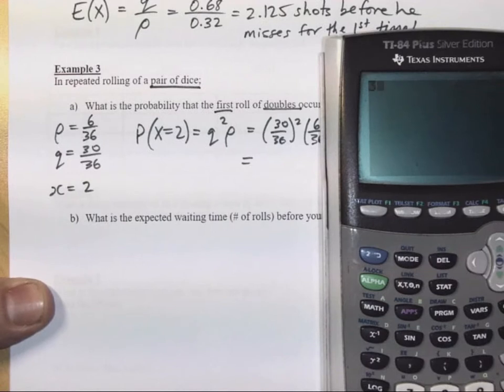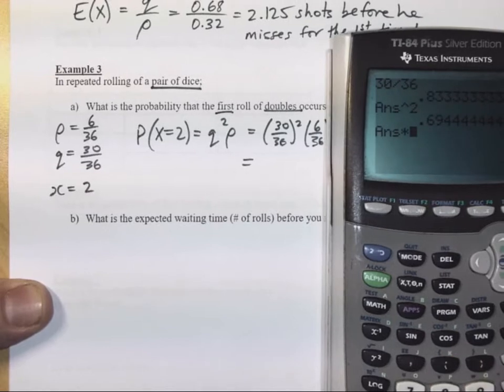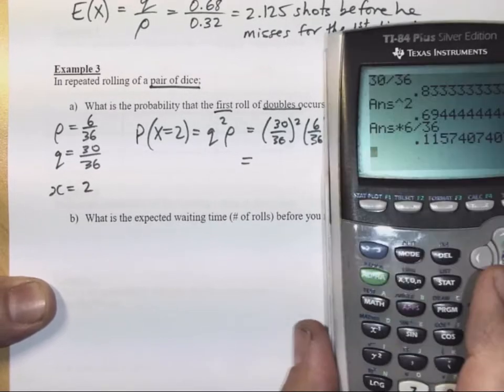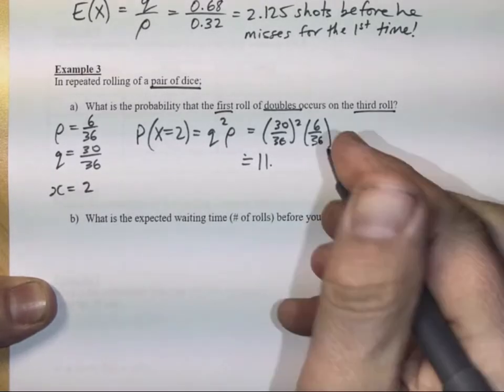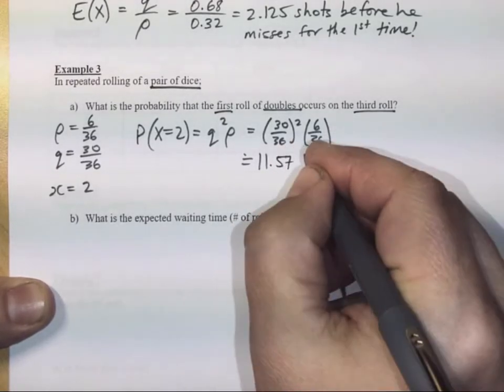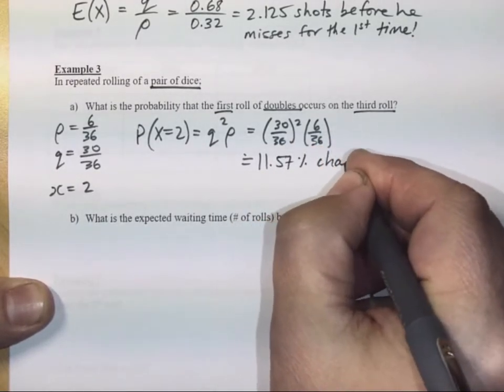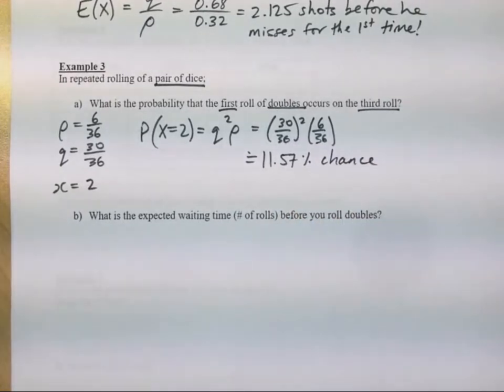Here we have 30 in 36 squared times 6 in 36, that's about an 11.57% chance of that happening. Of having to wait twice before doubles occurred for the first time.